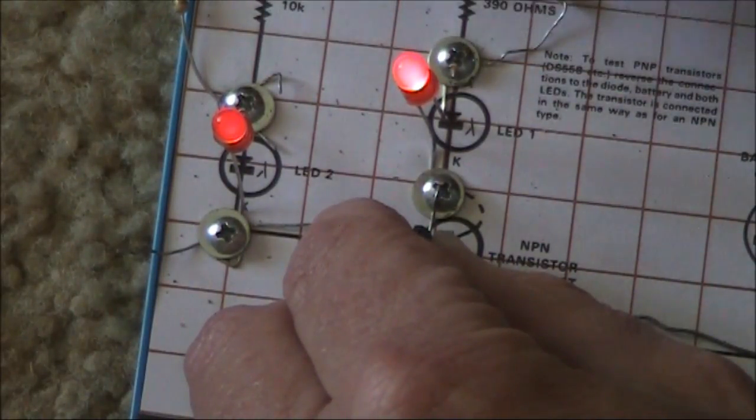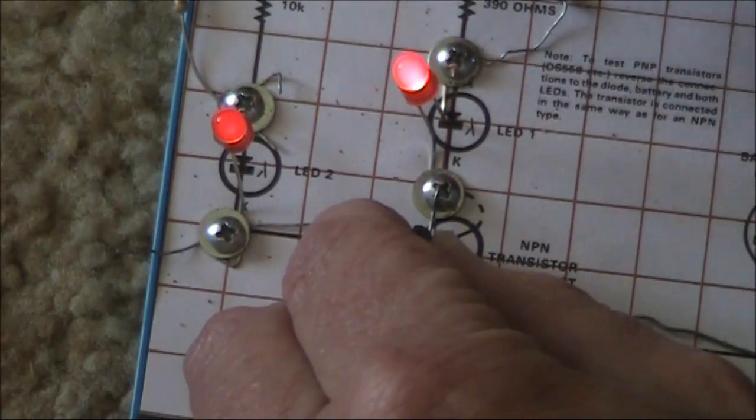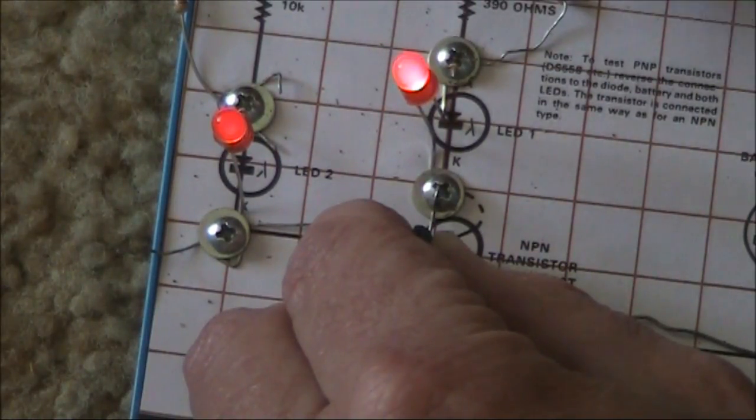You could, if you wanted to, use a multimeter and measure exactly the different currents, and then calculate the gain of the transistor. But this proves that the transistor is working, and that's mostly all you need.